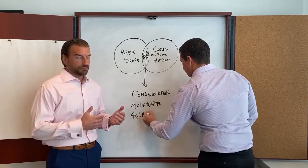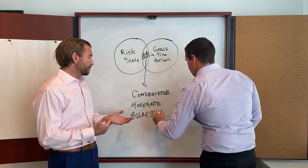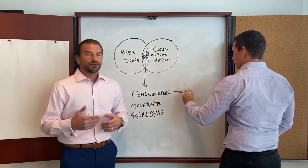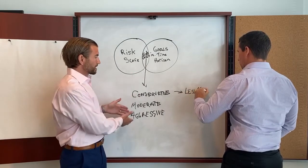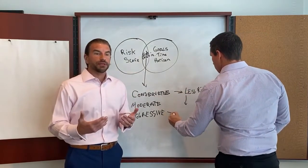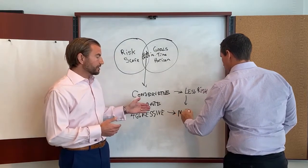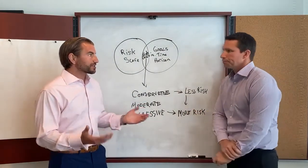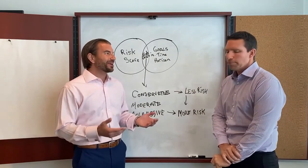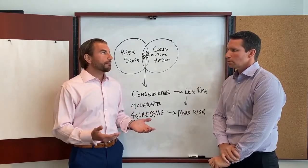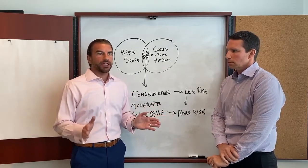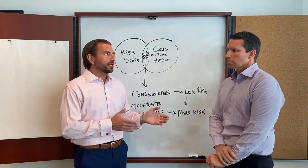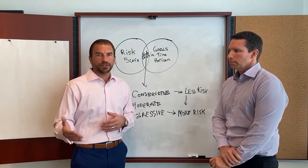These classifications lead right into the idea of risk versus reward. Where you fall along these classifications will put you in a position where you'll either have larger or smaller returns based on your willingness to take on risk. Investing really comes down to risk versus reward. You could tell us you want a 10% return but don't want any risk in your portfolio — that gets into Bernie Madoff territory. You can't have that kind of return without taking on that amount of risk within the portfolio as well.